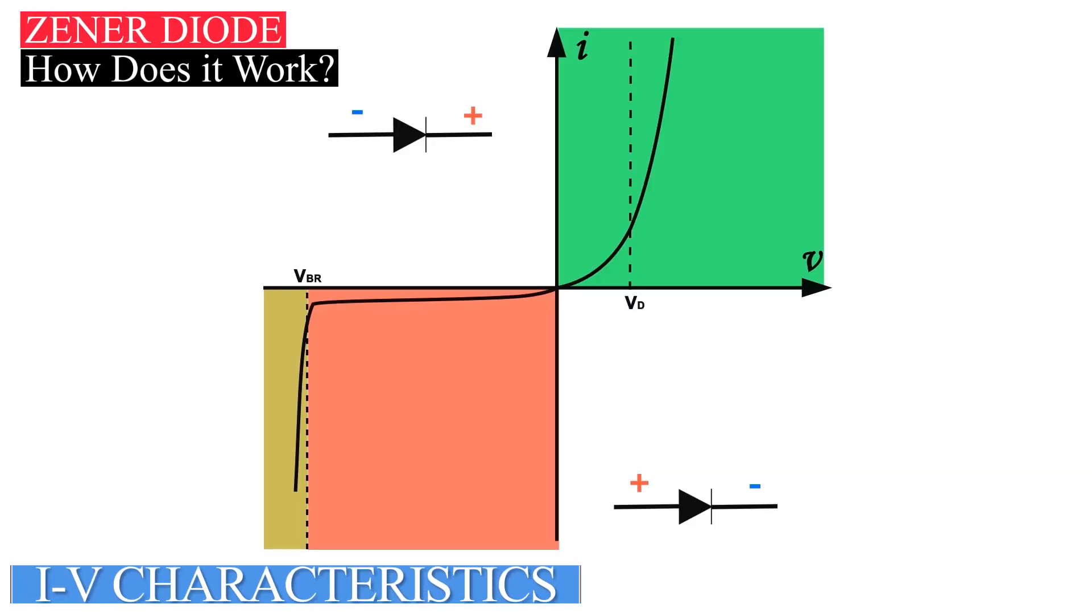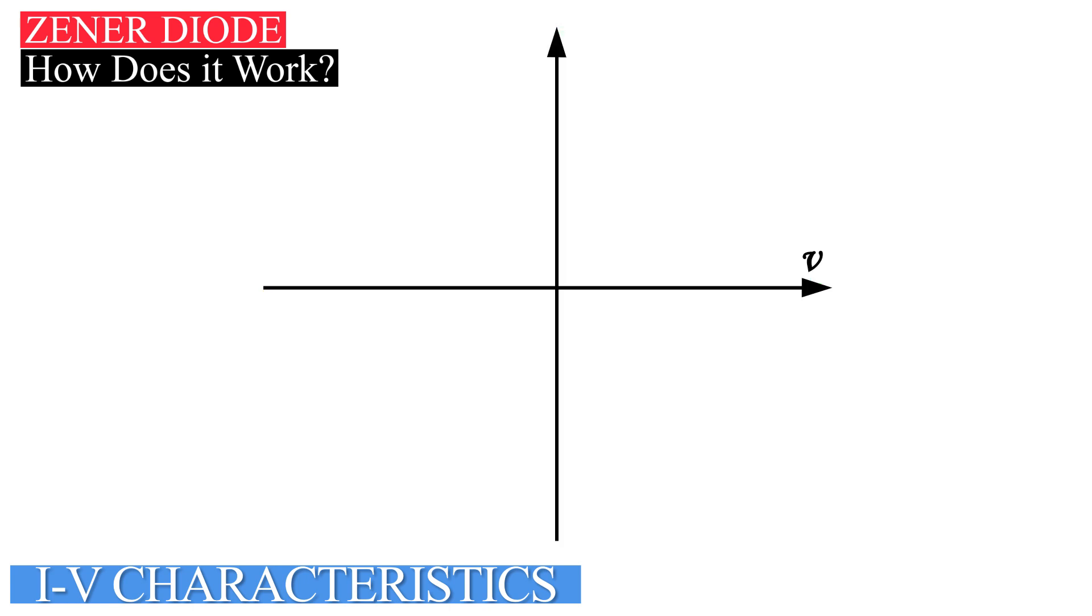We must mention IV characteristic of diode through graph. IV characteristic of a diode represents the relationship between current through a diode and voltage applied on the diode. X-axis represents voltage applied on the diode, and Y-axis represents current through a diode.